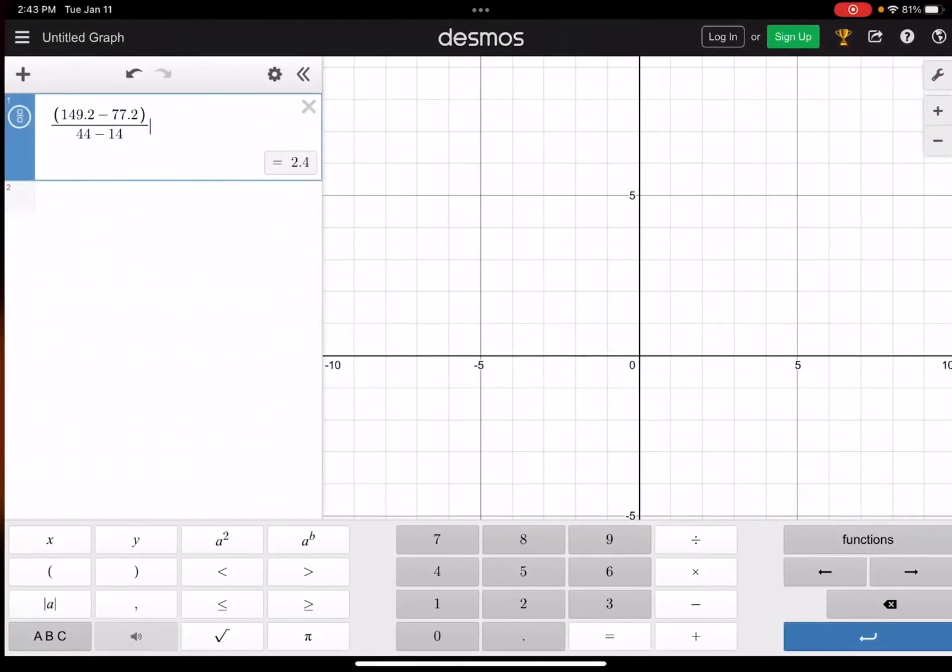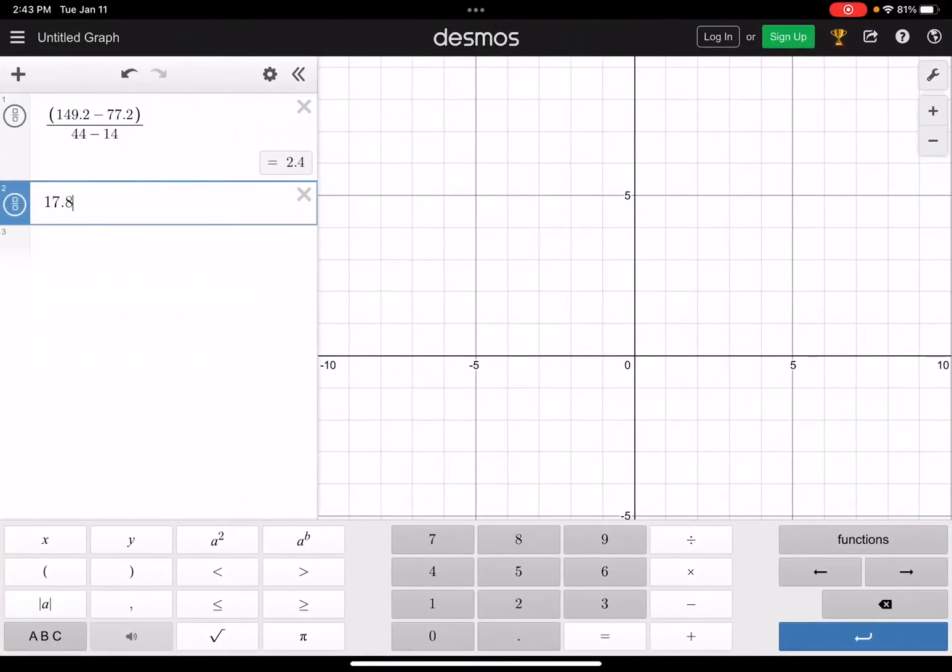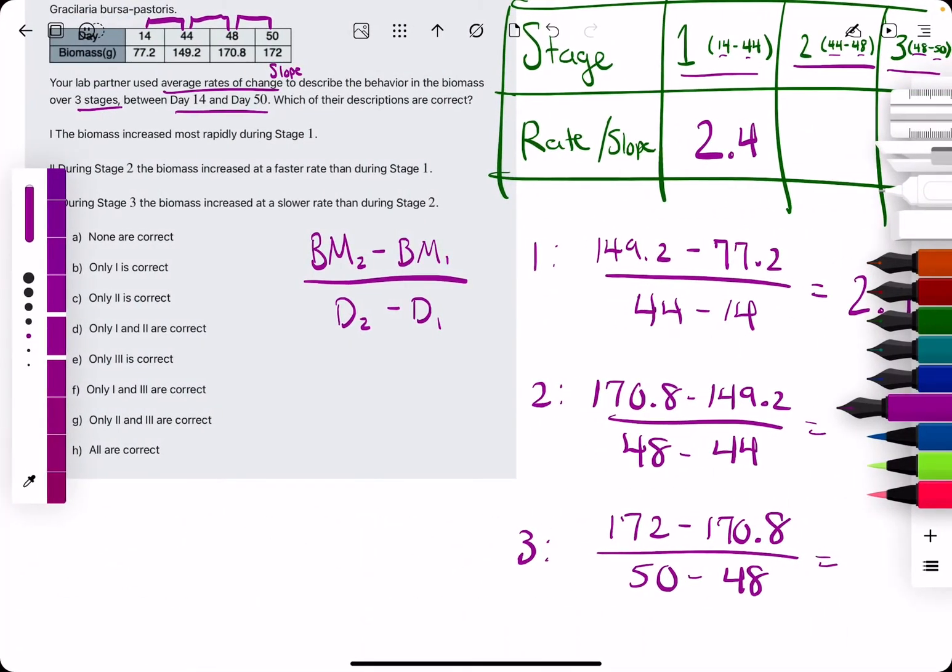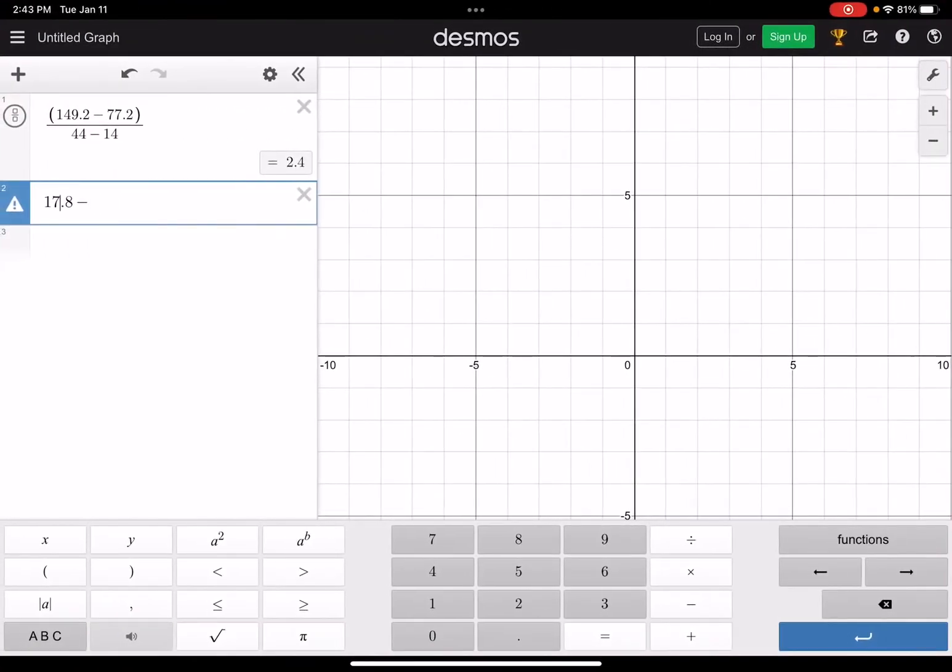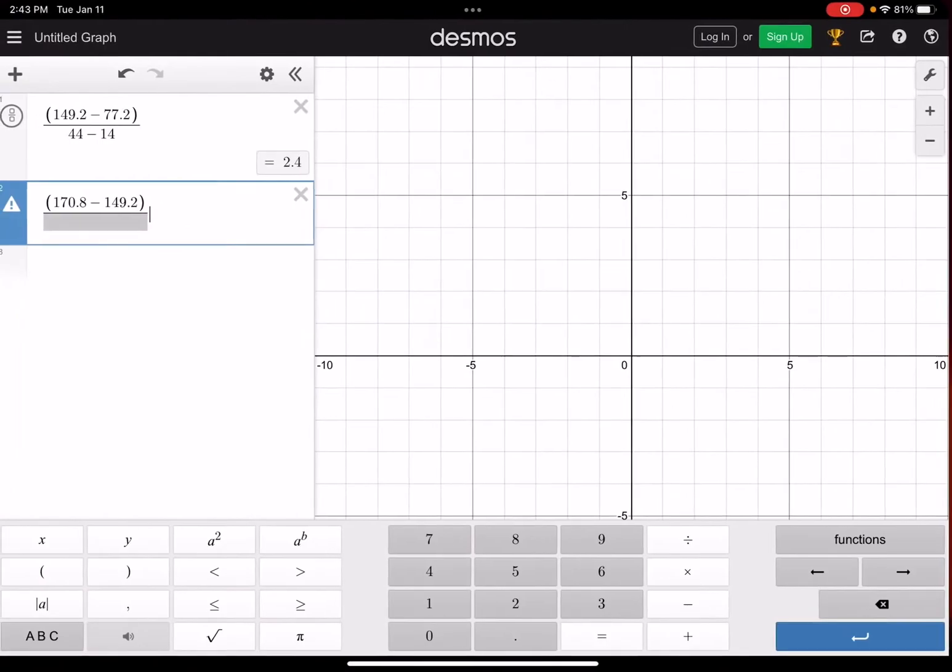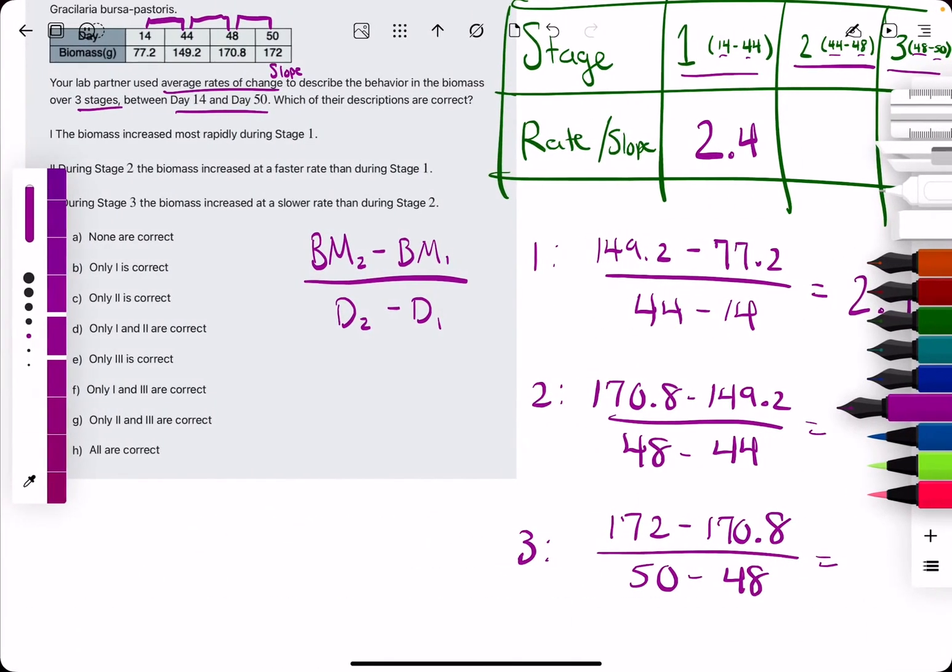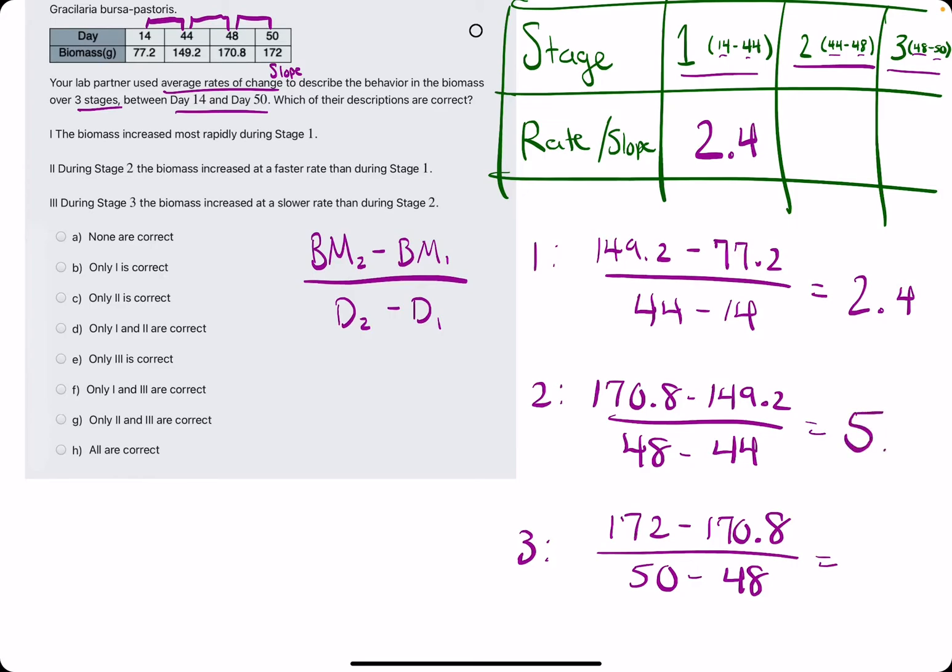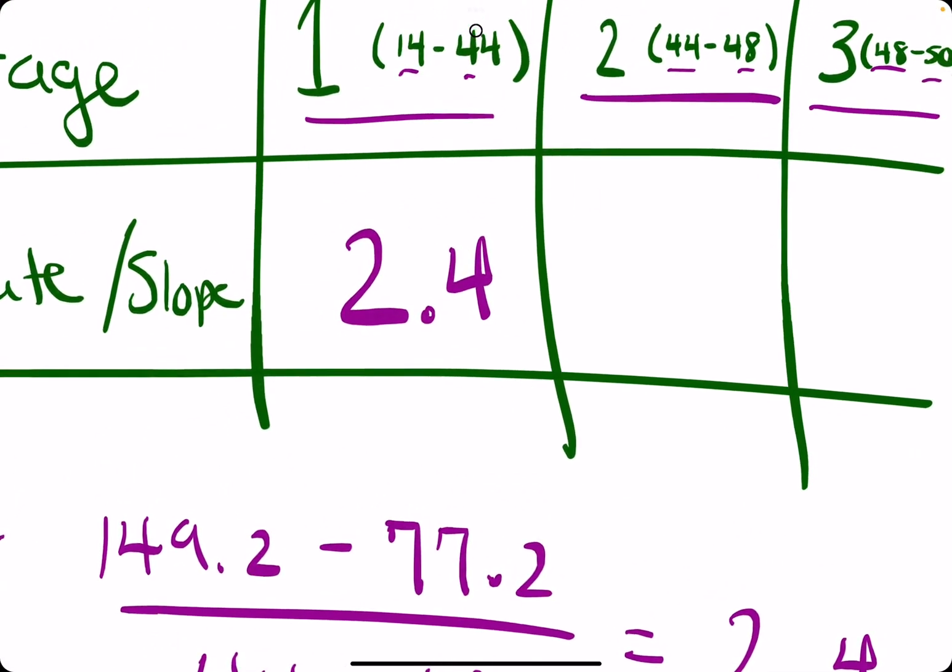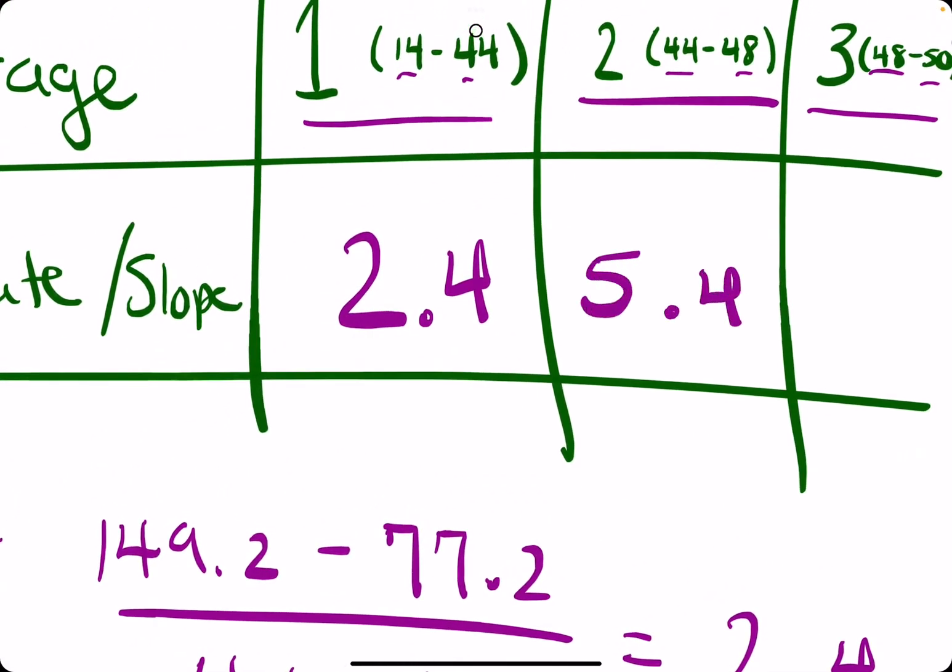170.8 minus 149.2. 170.8, 149.2, all divided by 48 minus 44, 5.4. So we're on a roll. Let's go ahead and plug that in there.